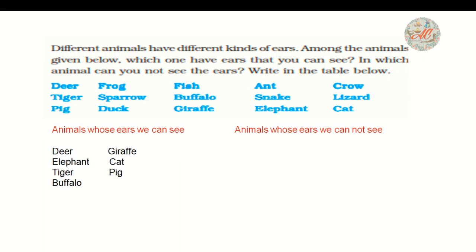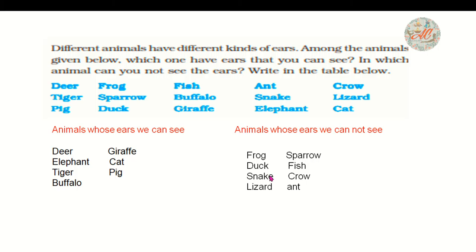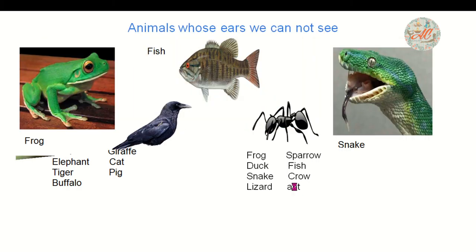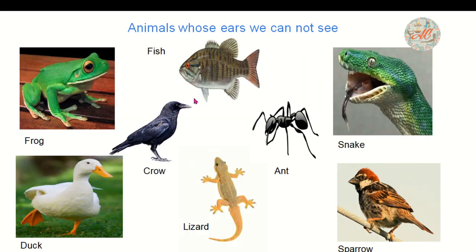Animals whose ears we cannot see: frog, duck, snake, lizard, sparrow, fish, crow, ant. In these animals we cannot see the ears because they have internal ears.